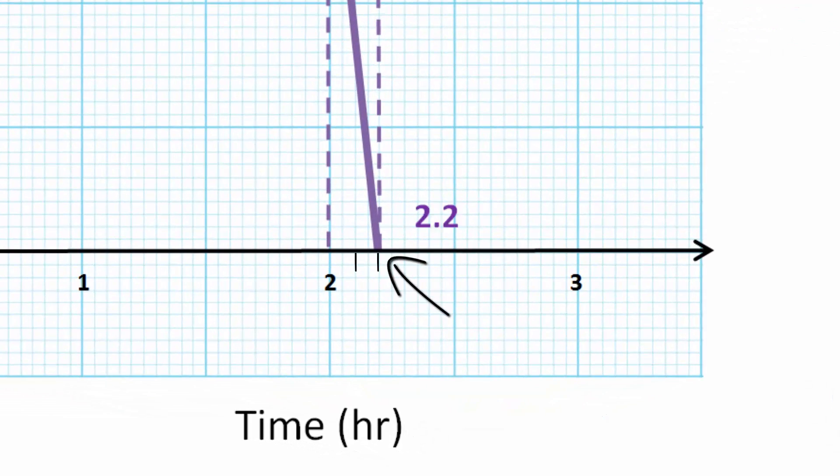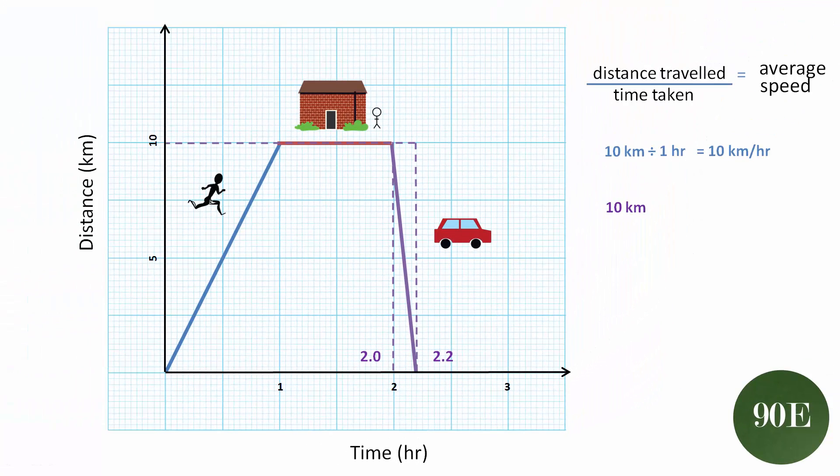We can see here that they returned home at 2.2 hours and they left their original journey at 2 hours. To calculate the change in time, we need to do a simple subtraction of 2.2 minus 2. In our equation, we can say 10 kilometers divided by 2.2 minus 2, and we always put those into brackets because that's what we want to calculate first before we do the division. So we can say that that would be 10 kilometers divided by 0.2 of an hour, because 2.2 minus 2 is 0.2, and that division leaves us with the average speed of 50 kilometers per hour.